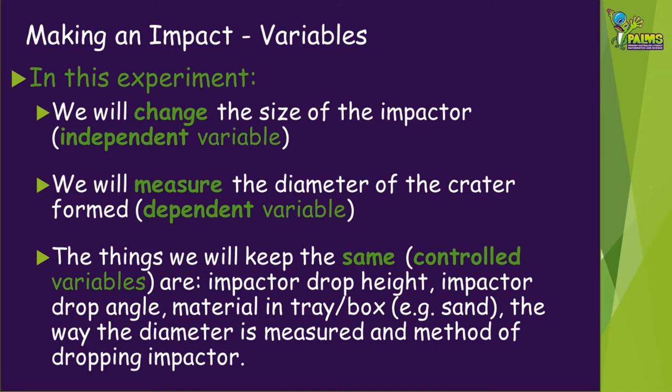Our control variables — the things we will keep the same — include the impactor's drop height and angle, the material in the tray, the impactor materials, the way we measure the crater diameter, and also our method of dropping the impactor.